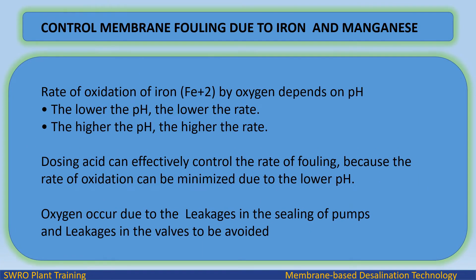To control membrane fouling due to iron and manganese, the rate of oxidation of iron, Fe2+, by oxygen depends on pH. The lower the pH, the lower the rate; the higher the pH, the higher the rate. Dosing acid can effectively control the rate of fouling because the rate of oxidation can be minimized due to the lower pH. Acid dosing also helps minimize leakages in pump seals and valves.